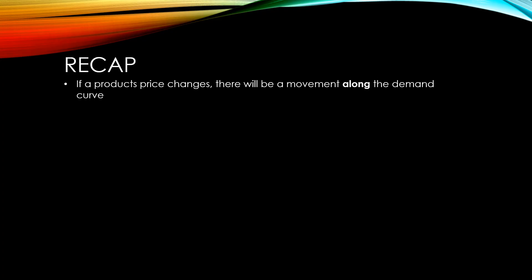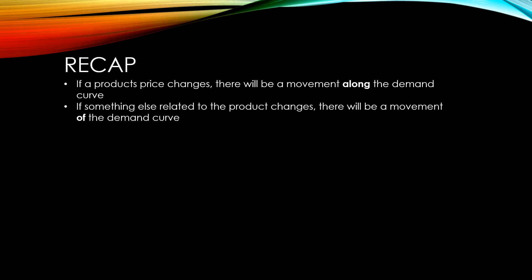To recap the most important points: if a product's price changes, there will be a movement along the demand curve. If something else related to the product changes, there will be a movement of the demand curve either left or right. This has been a list of the factors that affect demand directly, and you will need to learn this list. Many students have difficulty differentiating between the factors that affect demand and those that affect supply, as both can have an effect on market equilibrium price and quantity.